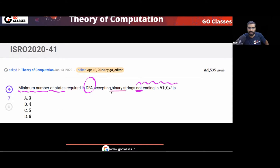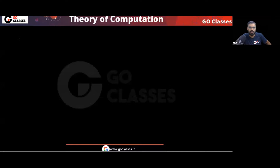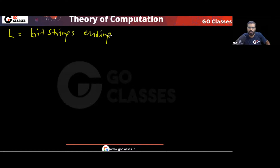Binary strings means the alphabet is {0, 1}. The question says strings not ending in 101. So what we can do first is create the language of binary strings ending with 101, then work from there. Consider the language of bit strings ending with 101.